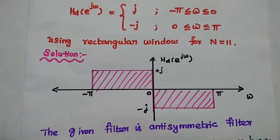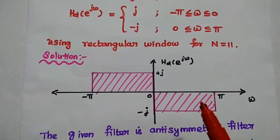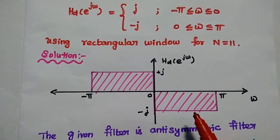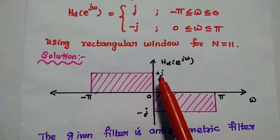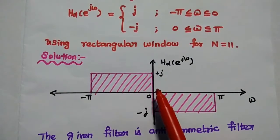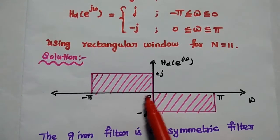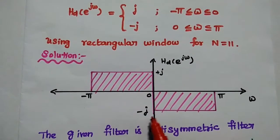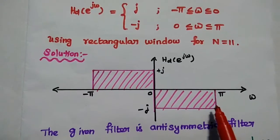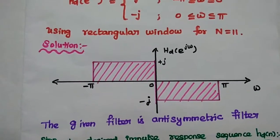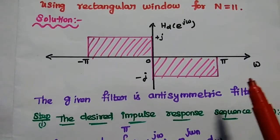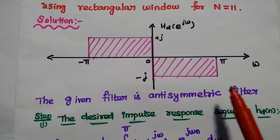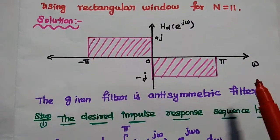In the solution, first we have to draw the frequency response diagram for the given values. The value is plus j when the frequency is from 0 to minus pi, and minus j when the frequency is from 0 to pi. From this diagram we can understand that the Hilbert transformer is an anti-symmetric system.